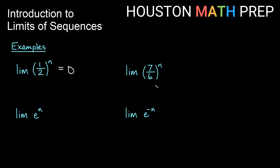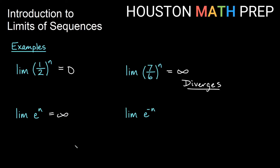The limit of (7/6) to the n: if we're repeatedly multiplying by something not between negative 1 and 1, that's a geometric sequence and this will get larger and larger as n gets bigger because the ratio is greater than 1. So the limit is infinite and we say this sequence diverges. Similarly, the limit of e to the n: e is about 2.7, which is bigger than 1, so we're repeatedly multiplying by something greater than 1 — this is exponential growth, getting bigger without bound. The limit is infinity and this also diverges.